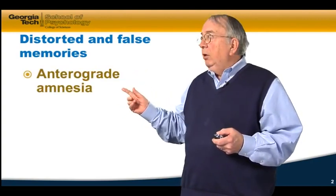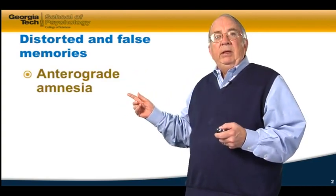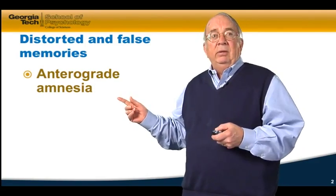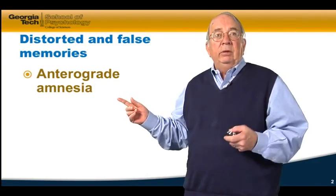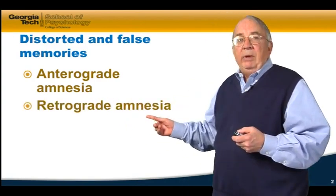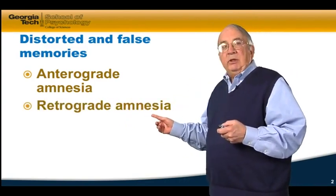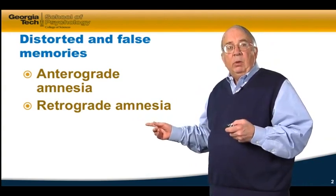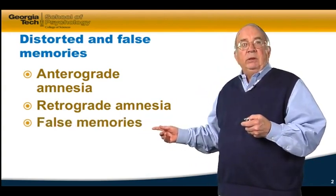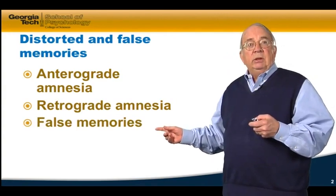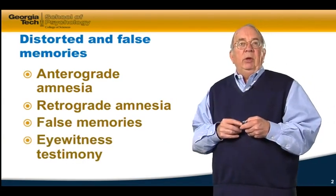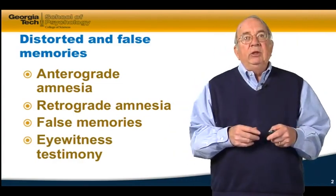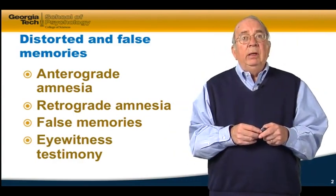We're going to talk about first, anterograde amnesia — the inability to remember things that happened after an event occurred. We'll also talk about retrograde amnesia, when we can't remember something in the past because something occurred, like brain trauma. And we'll talk about false memories, memory illusions, and eyewitness testimony — how accurate memory for an event you witnessed can actually be.